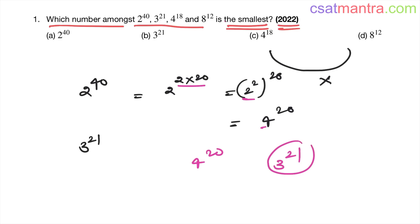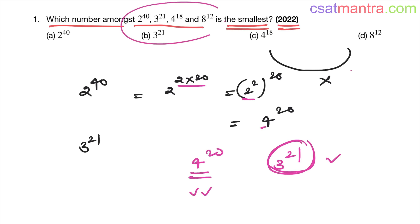Now compare 4 power 20 and 3 power 21. With 4 power 20, you are multiplying 4 twenty times — each multiplication makes the magnitude much bigger. With 3 power 21, you multiply only 21 times but starting from a smaller base. So 3 power 21 is clearly the smallest. You can also solve these using logarithms, which we will cover in the course.